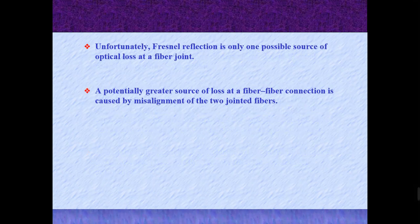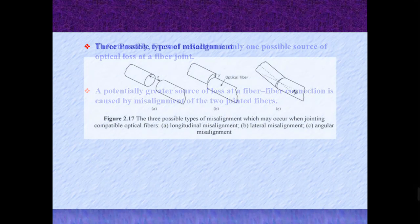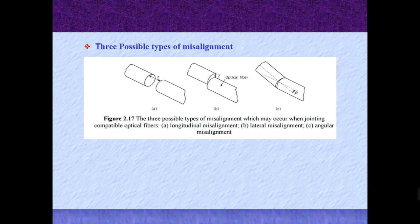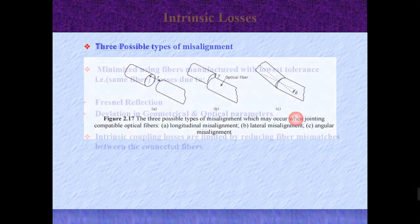Unfortunately, Fresnel reflection is not the only possible source of optical loss at the fiber joint. Potentially the greater source of loss at a fiber-to-fiber joint connection is caused by misalignment of the two joined fibers. There are three possible types of misalignment: the first is longitudinal misalignment, the second is lateral misalignment, and the third is angular misalignment.